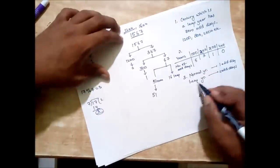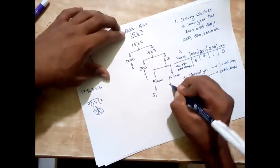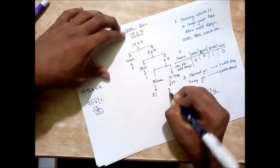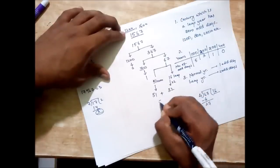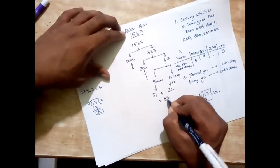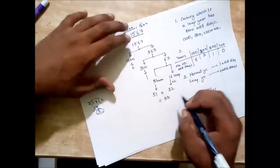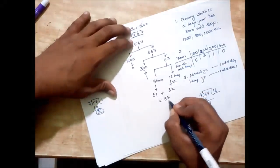And leap year has two odd days, so it means it should be multiplied by 2, which is 32. 51 plus 32 will give you 83.